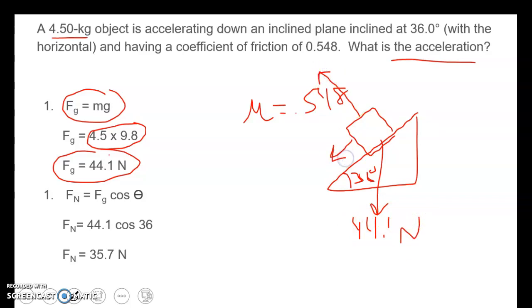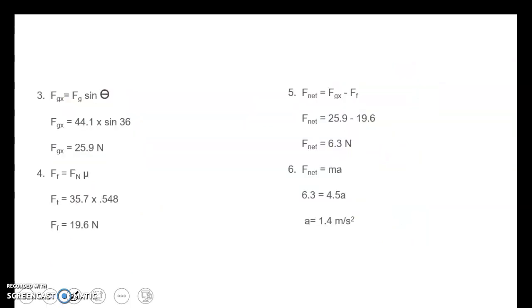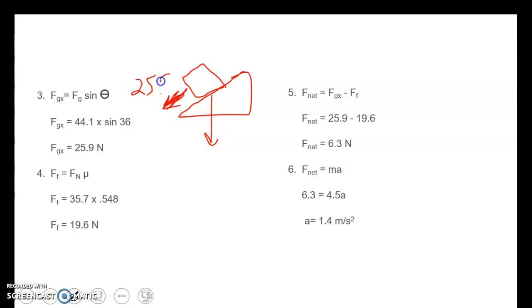4.5 times 9.8 gives us a force of gravity of 44.1 newtons. Normal force goes upward; the object wants to slide down, so friction acts up the incline. To find normal force, we take the perpendicular component of gravity: 44.1 times cosine of 36 degrees gives a normal force of 35.7 newtons. The parallel component is the force of gravity times sine of theta: 44.1 times sine of 36 gives 25.9 newtons — this is what gravity forces down the incline.